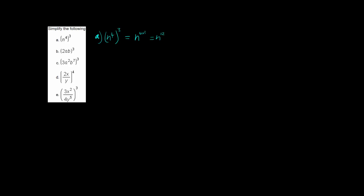Looking at part b, we have 2ab all cubed. This is the fifth index law, which states that if you have multiple things multiplied together all raised to the same power, then the power goes onto each individual item. So we have 2 cubed, a cubed, b cubed — everything becomes cubed in this case.